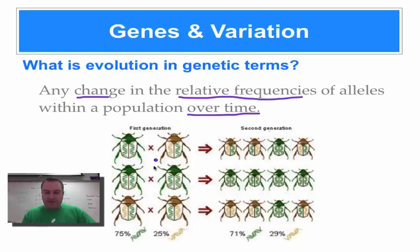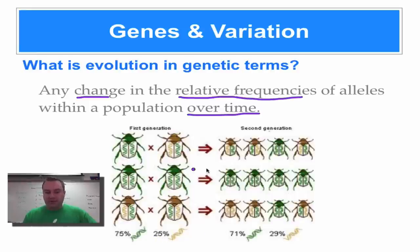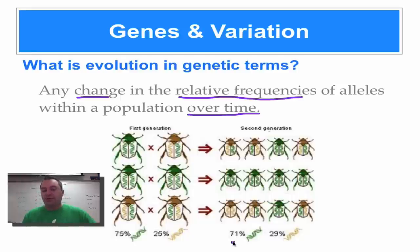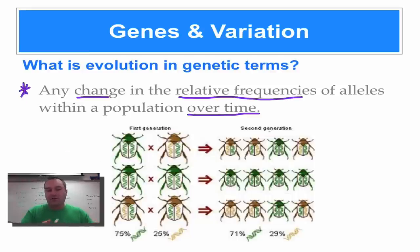We have a population of beetles with two alleles: a green allele and a yellow allele. Heterozygous individuals are brown. In the first generation, 75% of the gene pool was the green allele and 25% was the yellow allele. There must have been some selection pressure increasing the fitness of the yellow allele, because in the second generation the yellow allele becomes more common at 29%, while the green allele drops to 71%. This beetle population is evolving because we have a change in allele frequencies over time.